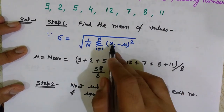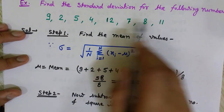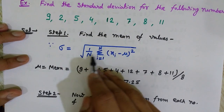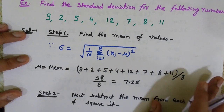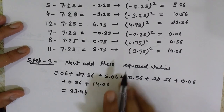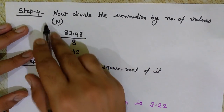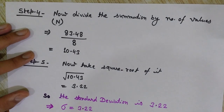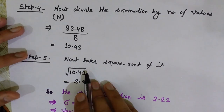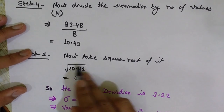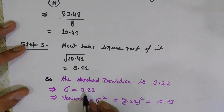After the summation, we divide by n. Our n is 8, since there are 8 numbers in the set. So we divide the summation by 8 and then take the square root to get the standard deviation sigma. The total summation is 83.48. Dividing by 8 gives 10.43. Taking the square root of 10.43 gives 3.22. So sigma, the standard deviation, is 3.22.